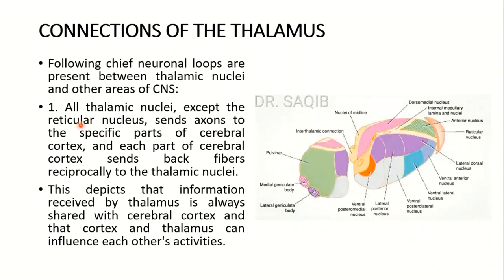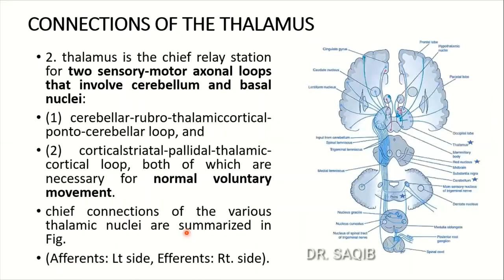All thalamic nuclei except the reticular nucleus send axons to specific parts of the cerebral cortex, and each part of the cerebral cortex sends back fibers reciprocally to the thalamic nuclei. This strong reciprocal connection depicts that information received by the thalamus is always shared with the cerebral cortex, and the cortex and thalamus can influence each other's activities.